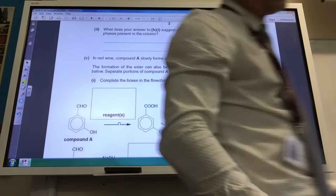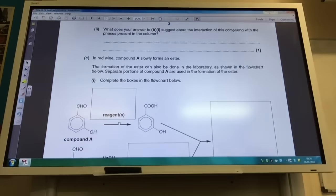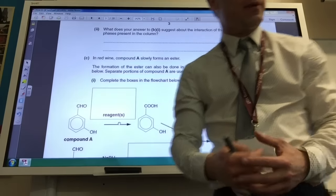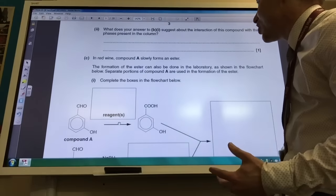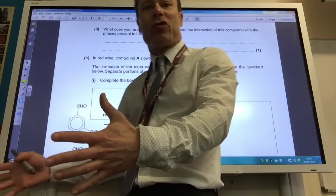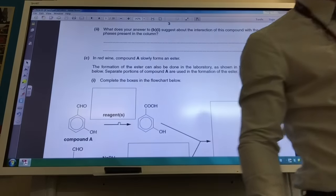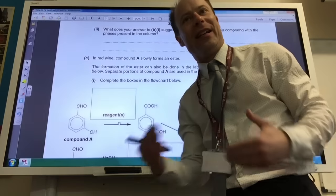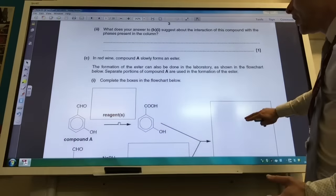So carrying on, what does our answer to part B suggest about the interaction of this compound with the phases? It suggests, because it's come off the column much faster, that compound B is less soluble in the stationary phase.